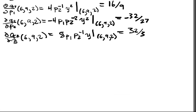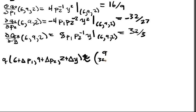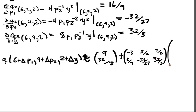Therefore, putting all these numbers together, we have a linear approximation which is Q of 6 plus delta P1, 9 plus delta P2, 2 plus delta Y is approximately equal to (9, 32/3) plus the Jacobian. I know all the values of the Jacobian. It's -3, 3/2, 9/2, and down here 16/9, -32/27, 32/3, times the change vector delta P1, delta P2, delta Y. We could plug in any small amount here and know exactly what that approximation should be.